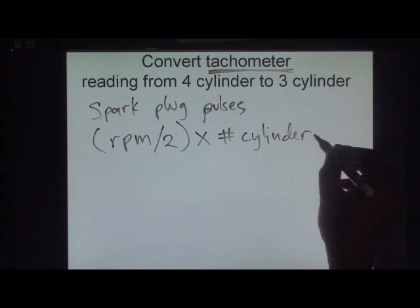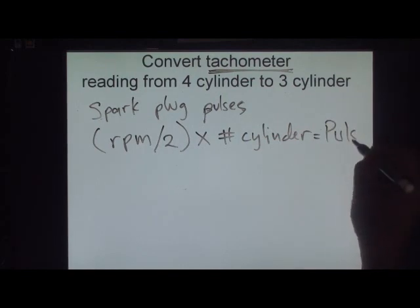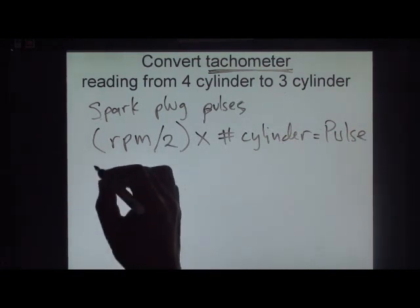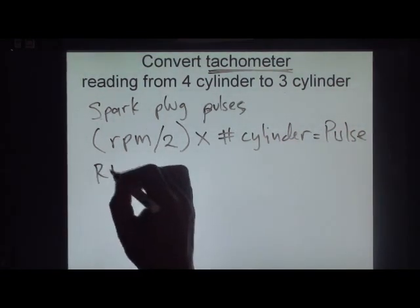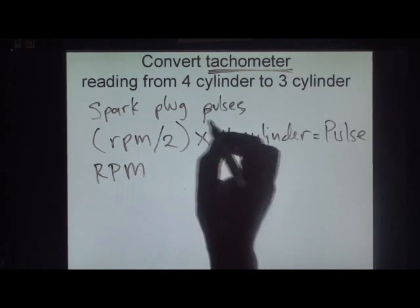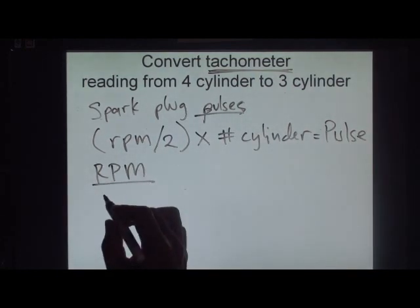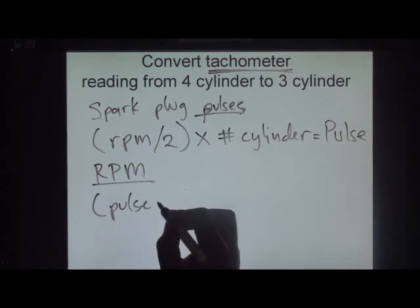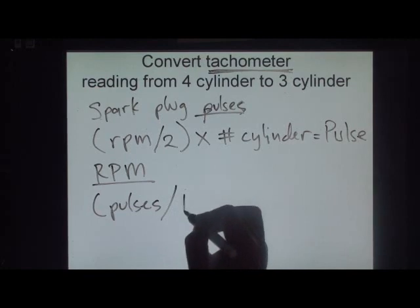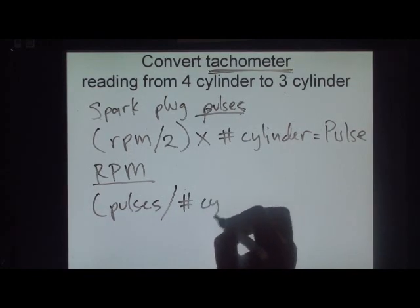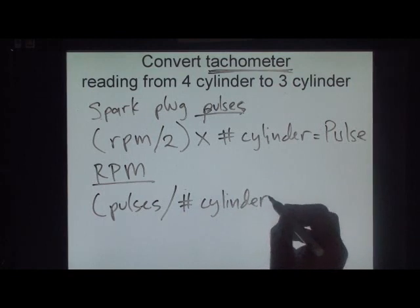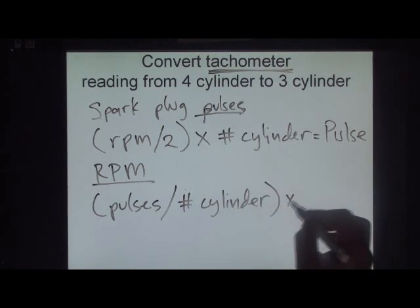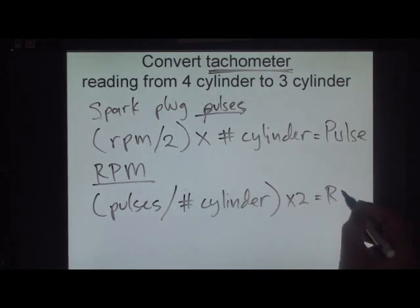So, ito na yung formula ng pulse. Ang formula naman ng RPM: yung pulse, i-divide mo ng number ng cylinder, then i-times mo ng 2 — ito yung RPM.